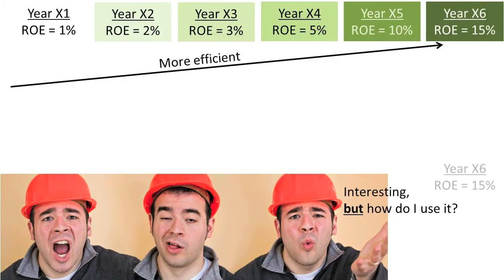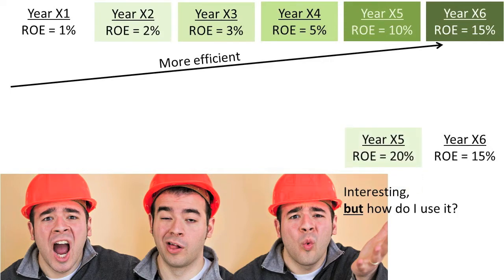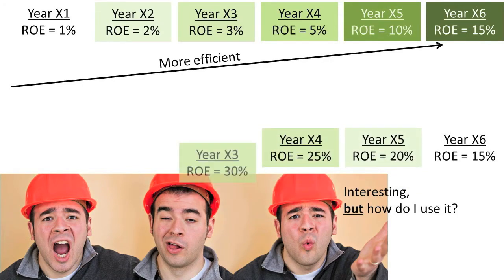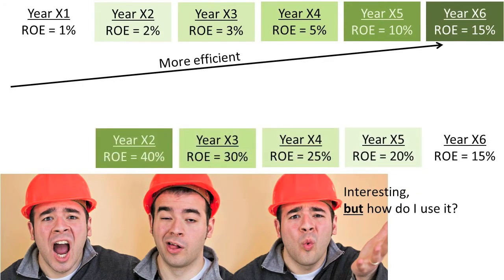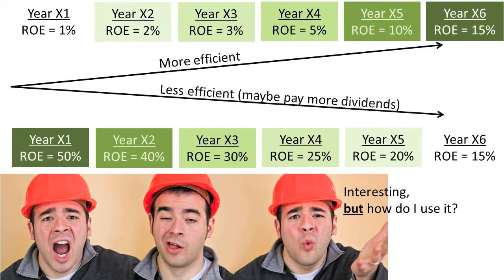If the trend showed ROE declining each year, it would be an indication that management is becoming less efficient at using investor-provided resources to generate profits. And maybe management should pay the company's earnings out to investors in the form of dividends, because maybe the investors could achieve a better rate of return on their resources without management's help.